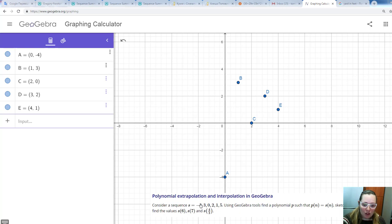We enter each term as one point, where the x coordinate of the point is the index of the term. For example, minus 4 is the 0th term and therefore we enter the point 0, minus 4.